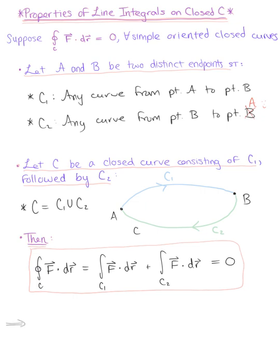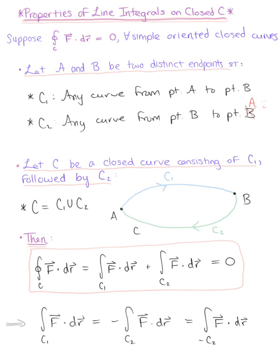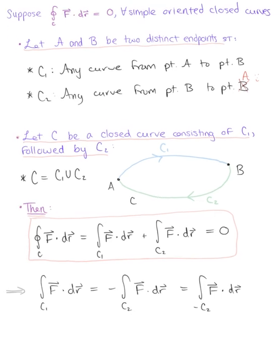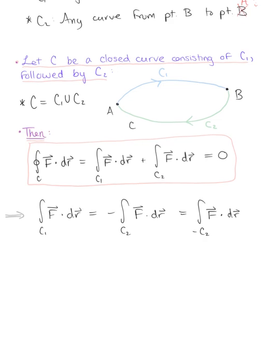This further allows us to conclude that the integral over C sub 1 of the conservative vector field F dotted with dR equals minus the integral over C sub 2 of F dotted with dR. A new notation to be mindful of is the integral over minus C sub 2 — we move the negative sign to the curve on the integral. This is our second important property: minus C sub 2 is the curve C sub 2 traversed in the opposite direction.